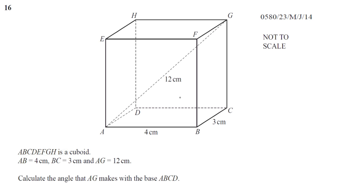They told us to calculate the angle that AG makes with the base ABCD. Now AG is the line, see over here, that's the line going from A to G.